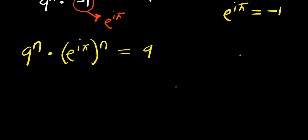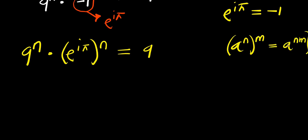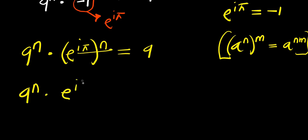From here, if you have a power n raised to the power of n, this equals a power n times n. So multiplying, we have 9 power n times e power i times pi times n equals 9.